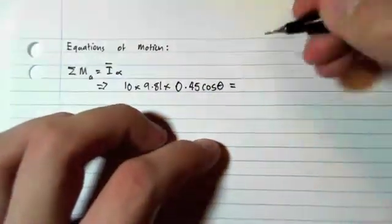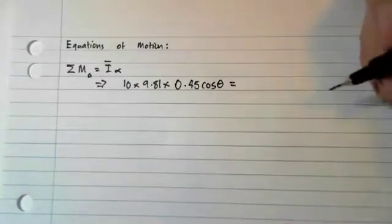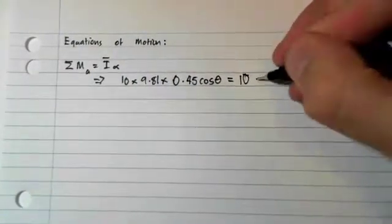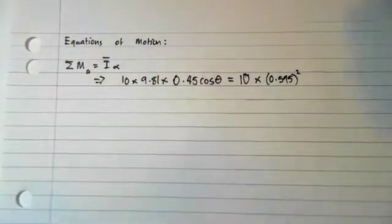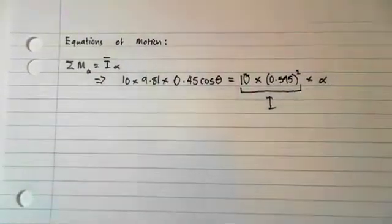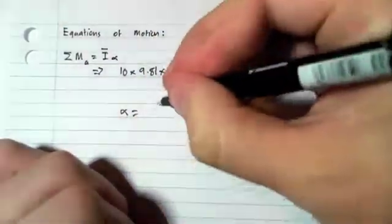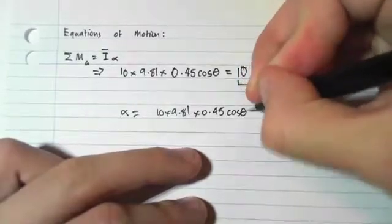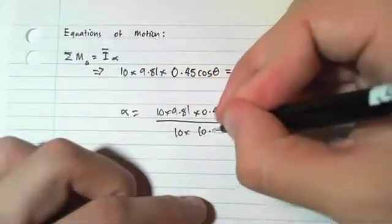And that is just equal to our mass moment of inertia, which is the mass times the radius of gyration squared, which is 10 multiplied by 0.595 squared times our angular acceleration alpha. And then if we make alpha the subject, we end up getting alpha equals 10 times 9.81 times 0.45 cosine theta over 10 times 0.595 squared.